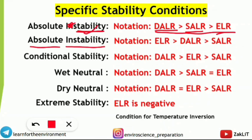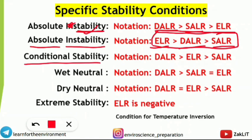For absolute instability, the DALR falls between the ELR and SALR — the notation will be given and you have to answer whether it is absolute instability or stability. For conditional stability, the ELR is in the mid portion — that is between DALR and SALR — and the least is SALR. So in conditional stability: DALR > ELR > SALR.